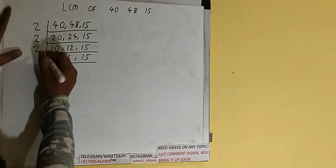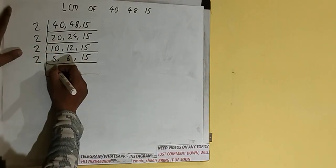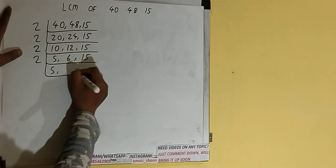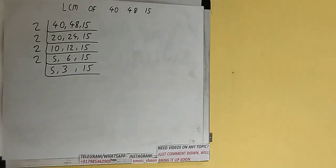Now only the second number is divisible by 2, so we divide the second number and copy the first and last numbers down. The second number becomes 3. Now none of the numbers are divisible by 2.